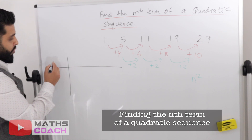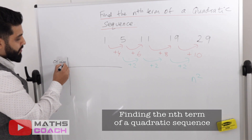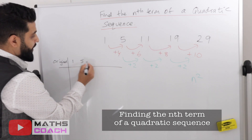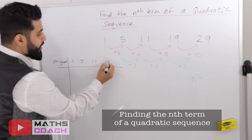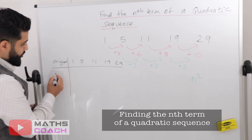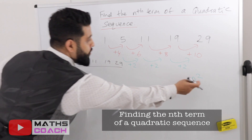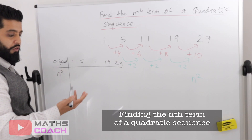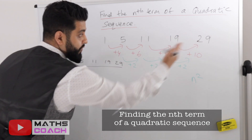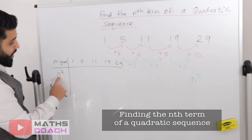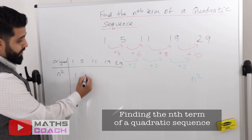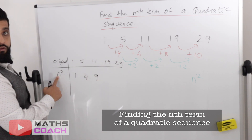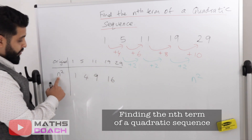Next, set up a table with your original sequence of numbers up top: 1, 5, 11, 19, 29. Then write down what you've just found — n squared — and substitute the values of n as 1, 2, 3, 4, 5 for the first five terms. So: 1 squared is 1, 2 squared is 4, 3 squared is 9, 4 squared is 16, 5 squared is 25.